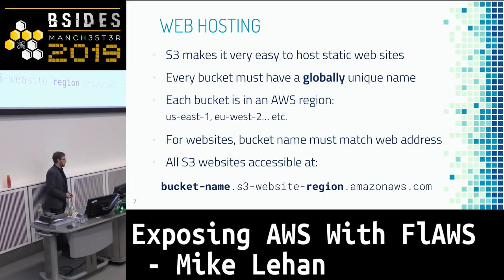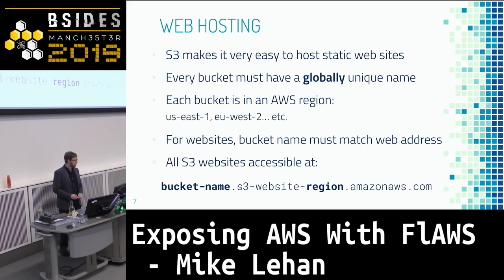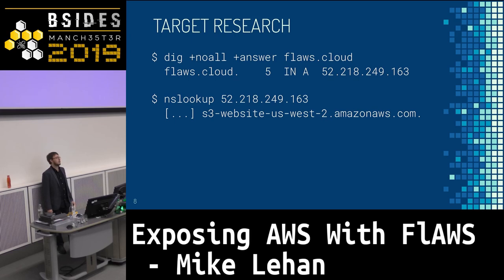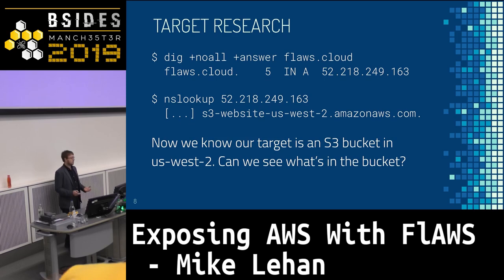All S3 websites are also accessible at a longer URL: bucketname.s3-website-region.amazonaws.com. So for example, if you were hosting google.com from an AWS bucket in London, it would be google.com.s3-website-eu-west-2.amazonaws.com. Flaws.cloud is itself hosted as an S3 static website. We can run a dig to find an A record for flaws.cloud, which gives us an IP address. By running nslookup on that IP, we find it's s3-website-us-west-2. We now know there is a bucket called flaws.cloud hosted in region us-west-2. But does knowing the bucket give us access straight away? Well, does it?